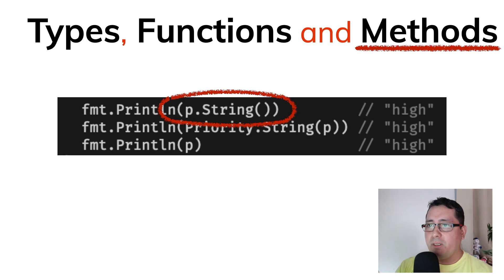First, let's look at p.string. This is a method. We define a string method, and we are using the variable that we defined before, called p, and we are calling that method.